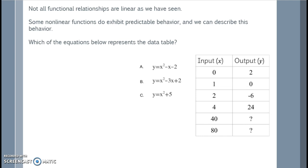Which of the equations below represents the data table? I know that the inputs are the x value, and the outputs are the y values. So I'll use my first equation, y equals x squared minus x minus 2, by plugging in 2 for my y value and 0s for my x values. When I simplify, I see that I'll end up with 2 equal to negative 2. So this does not work.